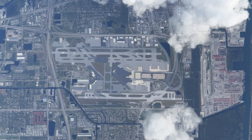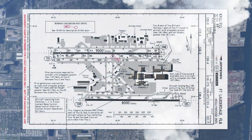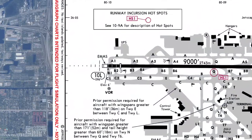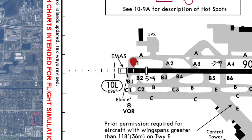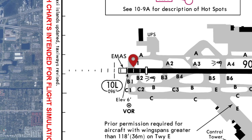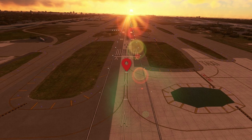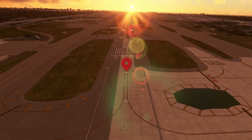Sometimes runways have displaced thresholds, which means you actually can't land on that area. We're going to pull the chart from Fort Lauderdale 10-9 page and look at the 10 left approach. You can see this line across the runway — that's indicating a displaced threshold. You cannot land on a displaced threshold. You can take off, but you can't land.